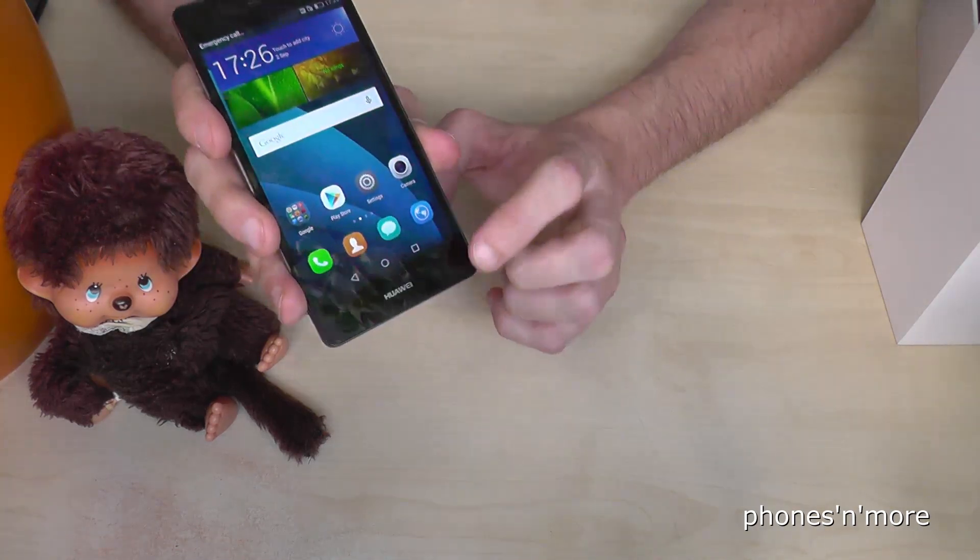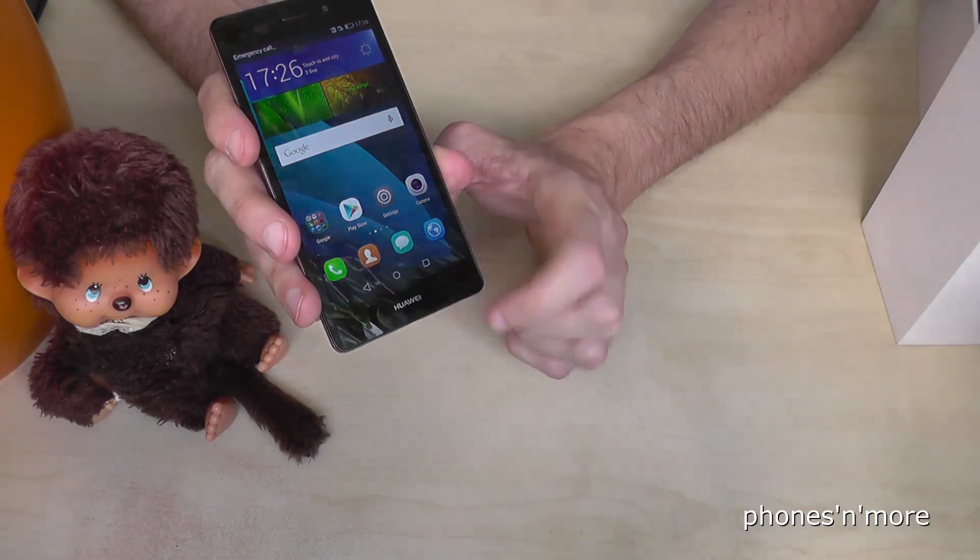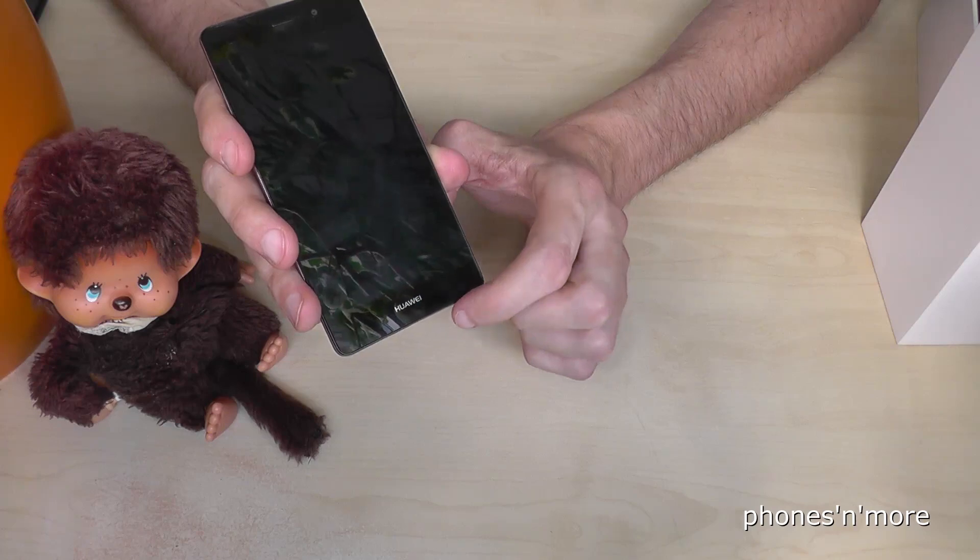So this is the Lite version. You can recognize it easily with the Huawei emblem at the front, also down to display.